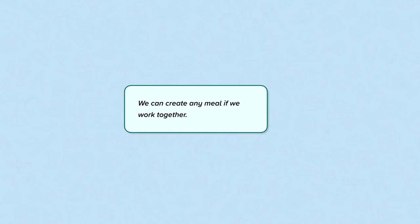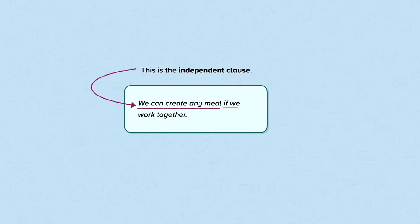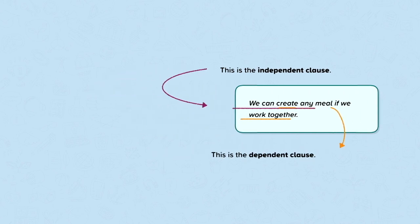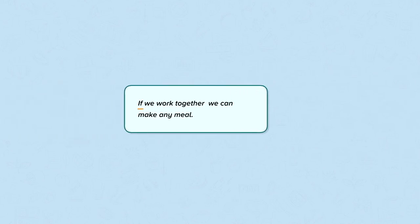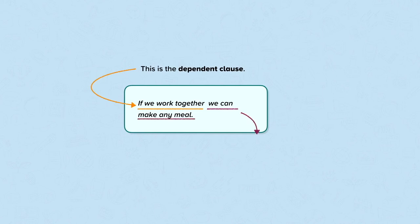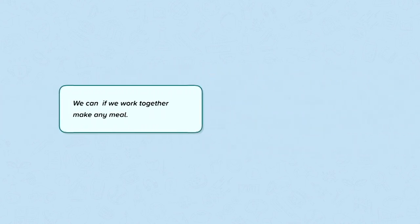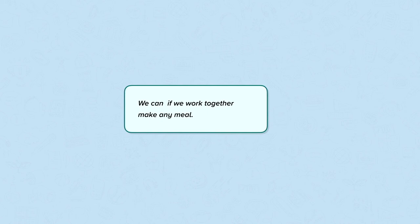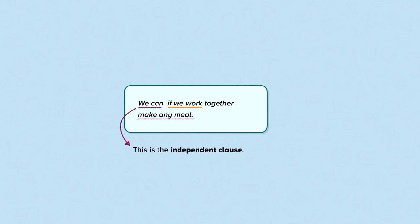Let's look at another example. "We can create any meal if we work together." We've got the independent clause at the beginning, followed by the dependent clause, so no comma is needed. But if we say "If we work together, we can make any meal," we've got the dependent clause first, followed by the independent clause, so we do need a comma after the dependent clause. Finally, we can also embed the dependent clause within the independent clause: "We can, if we work together, make any meal." This needs commas around the dependent clause to separate it from the independent clause.